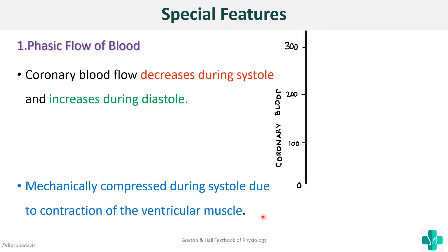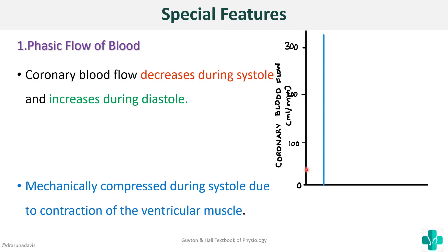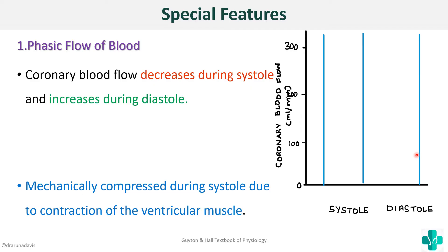You can depict phasic blood flow with a graph. On the y-axis, draw coronary blood flow from 0 to 300, marking 100 and 200 in between. On the x-axis, depict time, segmenting it into systole (shorter portion) and diastole (wider portion). During systole, blood flow decreases from 225 to less than 100; during diastole, it increases to nearly 300. Then the cycle repeats — this is the phasic blood flow of coronary arteries.